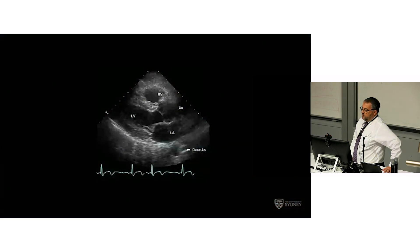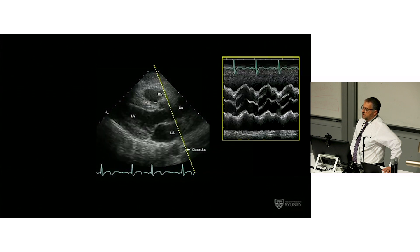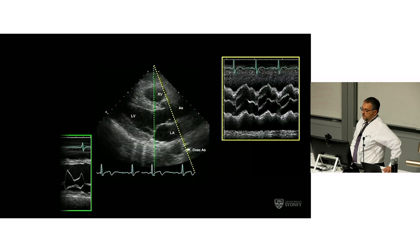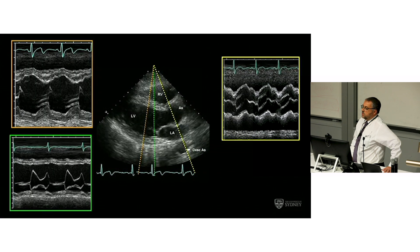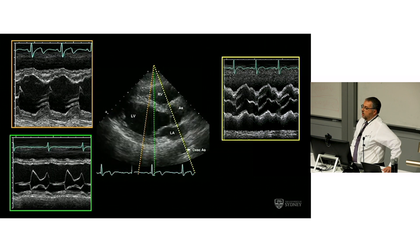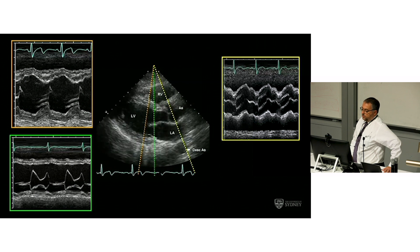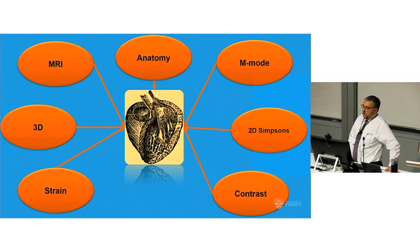Don't forget good old M-mode. Sometimes it was all we could get back in the day, and even now it still has a place. Using formulas such as the Teichholz method and fractional shortening, you can get a measure of LV function and ejection fraction.